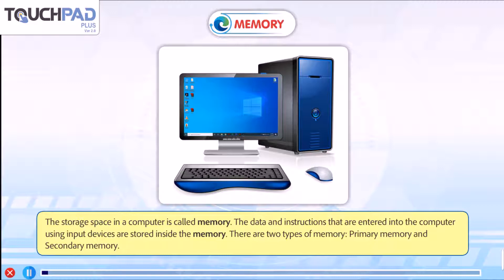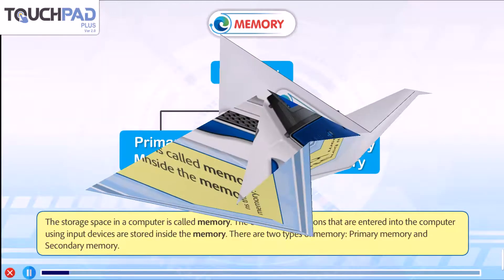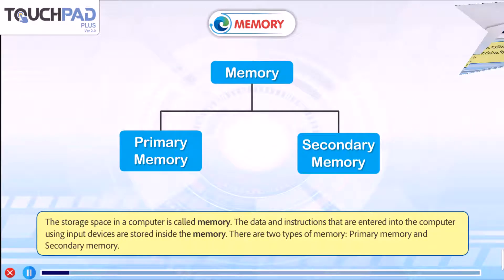There are two types of memory: Primary memory and Secondary memory. You can see in the diagram on the screen. The storage space in a computer is called memory. This is the main memory of a computer.